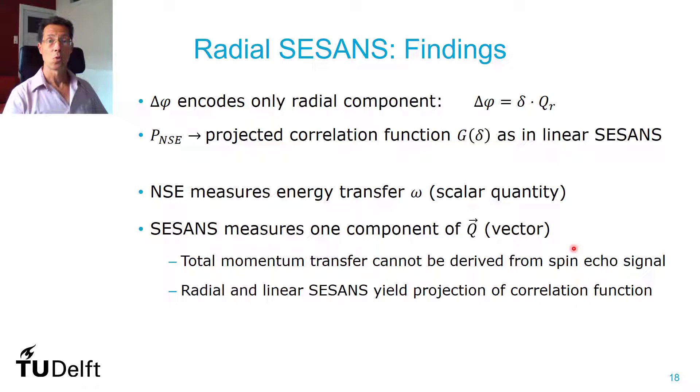So, to conclude our findings, there's not really any difference between linear SESANS and radial SESANS. You still measure only one component of the wave vector transfer. And can we understand it? Well, with neutron spin echo, you measure the energy transfer, and that's a scalar quantity. With SESANS, it turns out, you can measure only one component of a vector. But again, it's only one component, one scalar, that you can measure. So it needs one component only of this vector that you can measure.